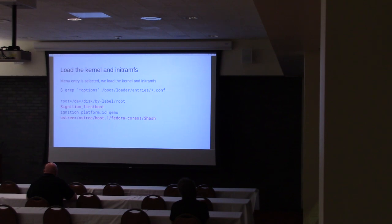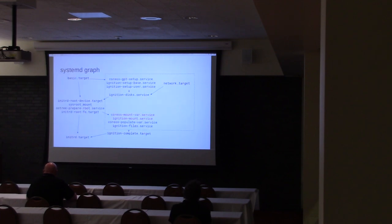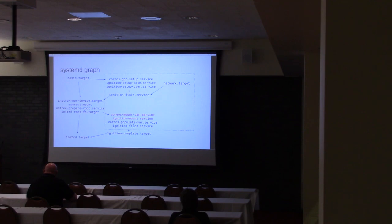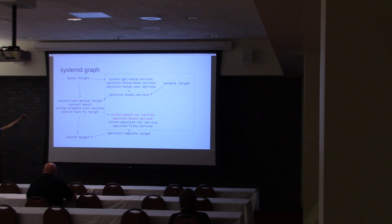Q: What are the differences between Fedora CoreOS and RHEL CoreOS boot processes? A: RHEL CoreOS is using an older version of Ignition that doesn't have the Ignition mount and unmount section. Because of that, and because we need to populate var on first boot, what RHEL CoreOS can do with var is less flexible. Pretty much everything up until initrd-root-fs.target is the same — it's the mounting and populating of var where it differs.